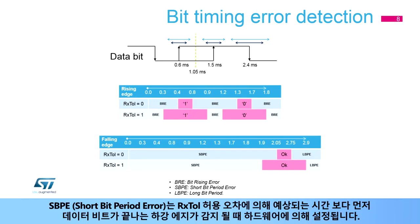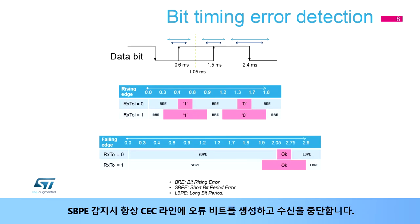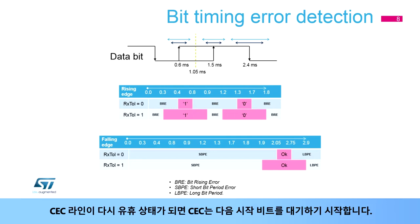A short bit period error or SBPE is set by hardware when a falling edge is detected ending the data bit before that expected by the RxTOL margin. Upon SBPE detection, an error bit is always generated on the CEC line and reception is aborted. CEC starts waiting for the next start bit once the CEC line is idle again.